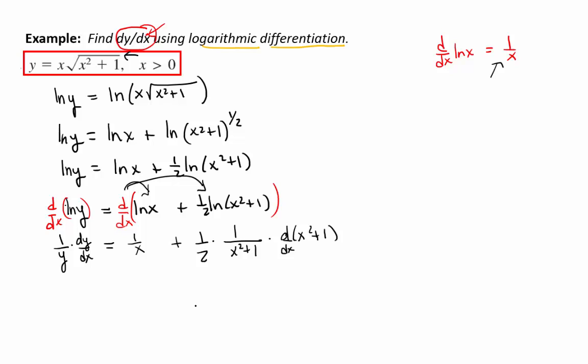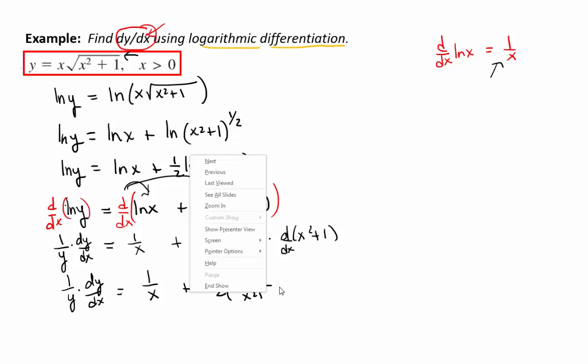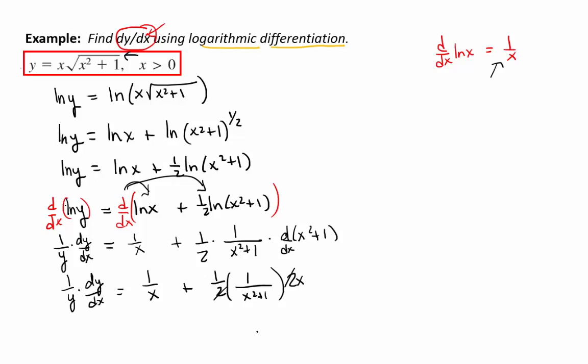So we have 1 over y times dy dx equals 1 over x plus 1 half times 1 over x squared plus 1 times what? 2x. Good. The 2's are going to cancel. Derivative of x squared plus 1.